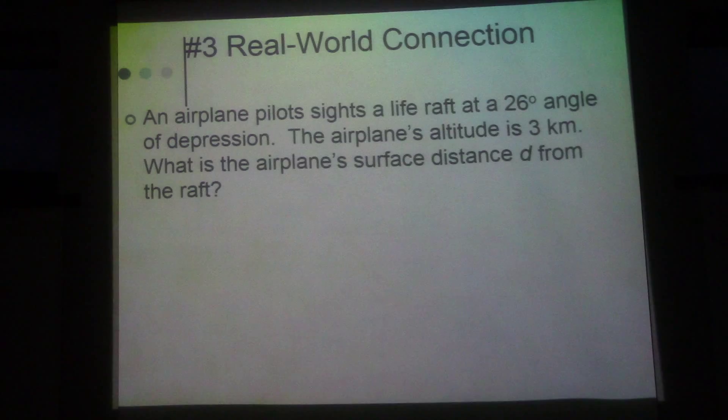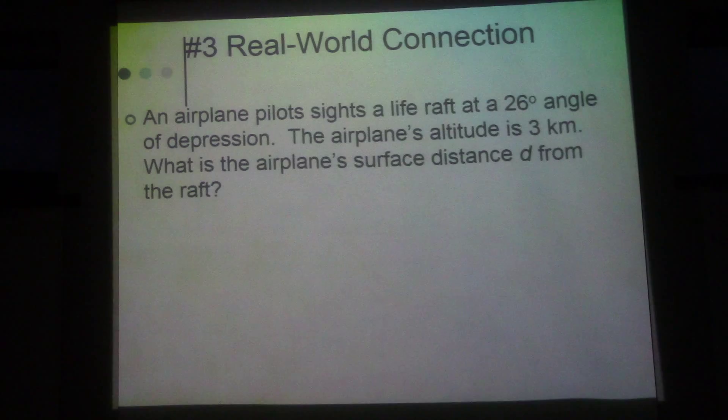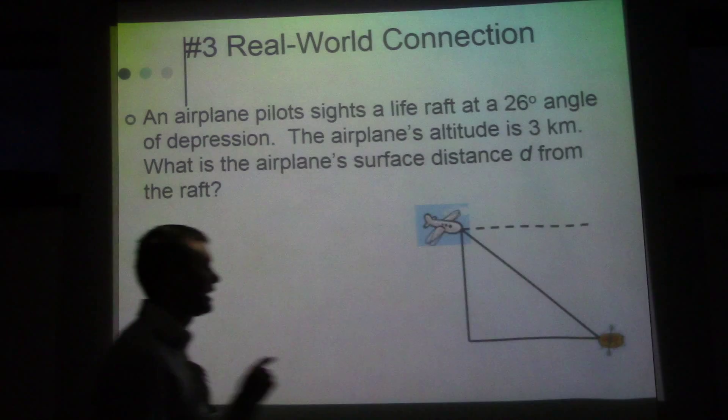So if this is 29 degrees, we have the side opposite of it and the side adjacent to it. So we'd use tangent of 29 equals opposite over adjacent. Then to solve for x, we multiply by 57, and we'd get about 31.6 feet.